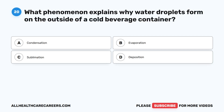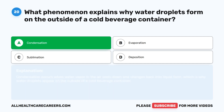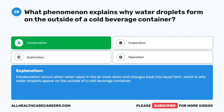Question twenty: what phenomenon explains why water droplets form on the outside of a cold beverage container? A. Condensation. B. Evaporation. C. Sublimation. D. Deposition. The correct answer is A. Condensation. Condensation occurs when water vapor in the air cools down and changes back into liquid form, which is why water droplets appear on the outside of a cold beverage container. Thank you for watching this video and we hope it was helpful. Click here for more HESI practice test videos or take your free HESI practice test.